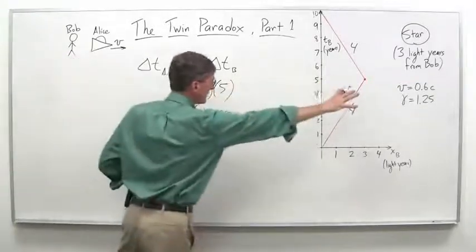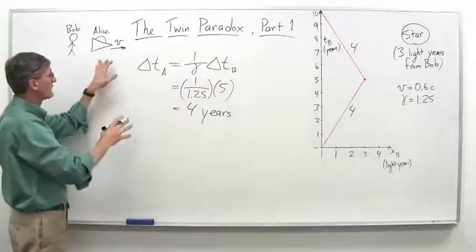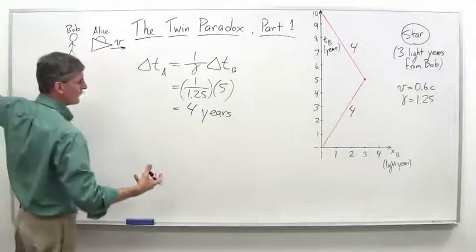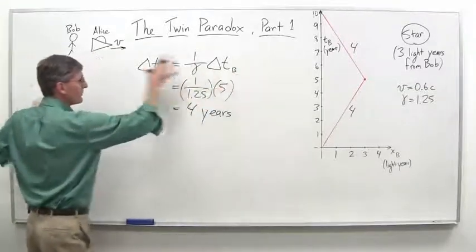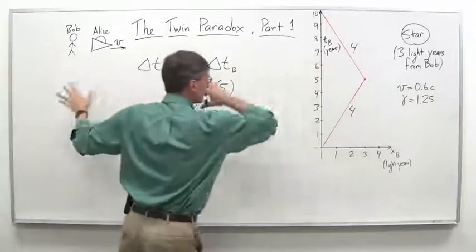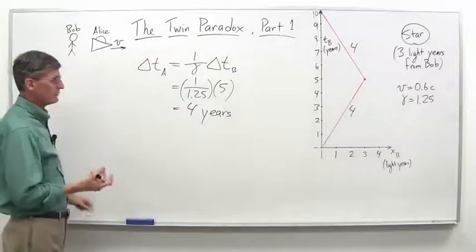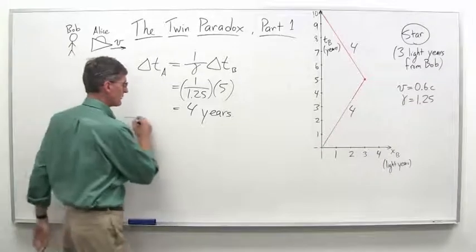So whether Bob is on Earth or planet or just his own spaceship there, Alice travels away to the star, comes back again. Or Alice could see Bob from her frame of reference, Bob travels that way, goes that way. The star comes to her and then back again. The star moves away and Bob comes this way.